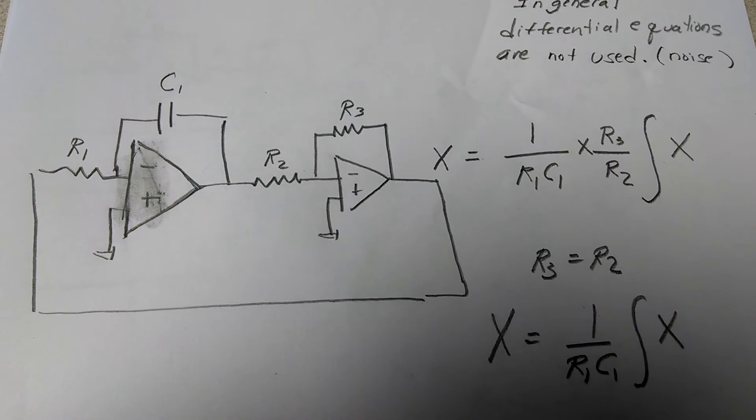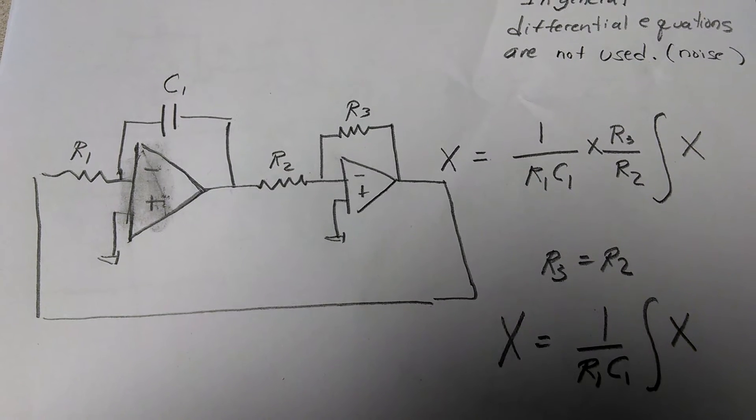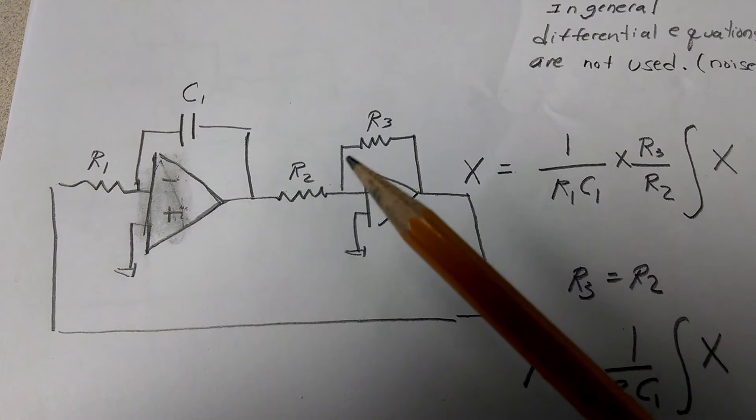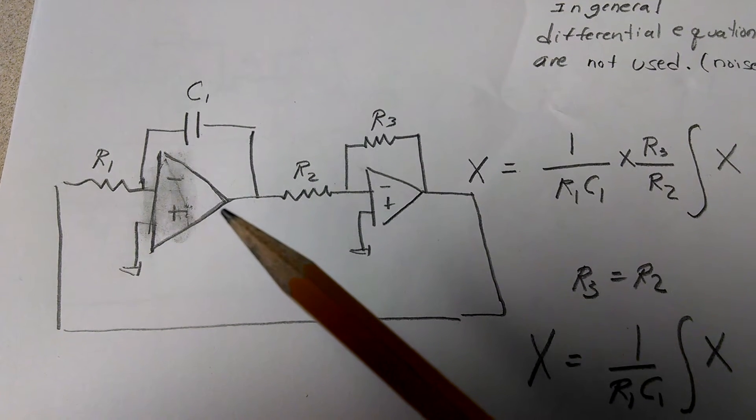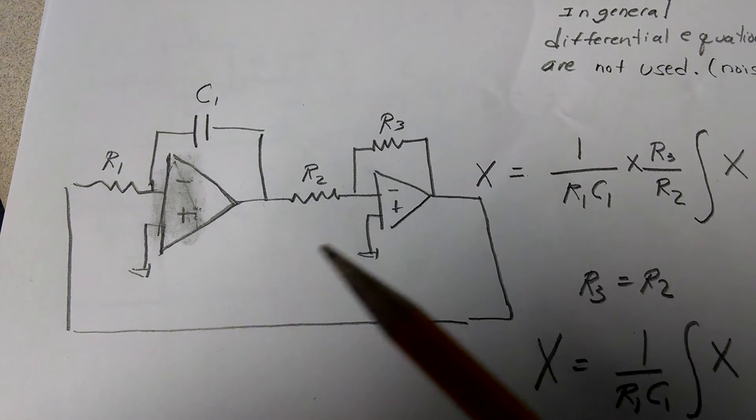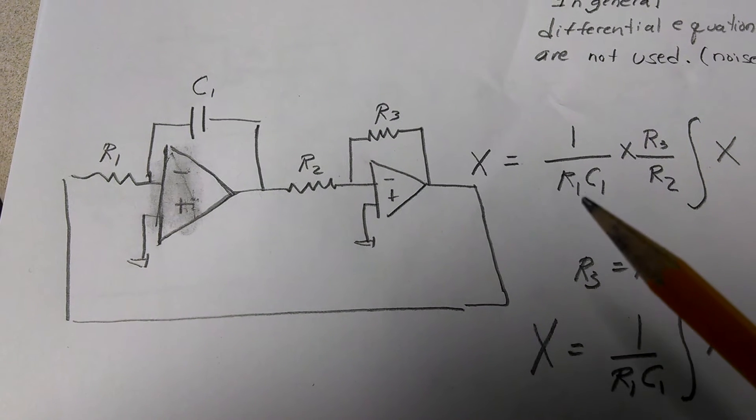Now, the next thing is, how do I get an integral of itself in a positive format? Well, you just put an inverting op-amp configuration right after the inverting integrator. And so when you multiply these functions times each other, you get 1 over r1c1, and the integral is over here,